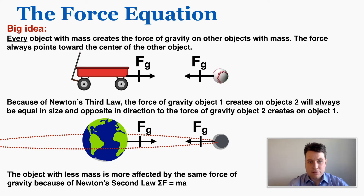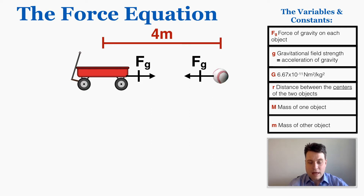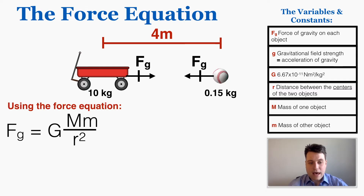Now an example using the force of gravity equation. To calculate the force of gravity you need the distance between the centers of the objects — here I'll imagine that's 4 meters — and the masses of the objects. I'll imagine the cart is 10 kilograms and the ball is 0.15 kilograms. The force of gravity equation is capital G times m times m over r squared.